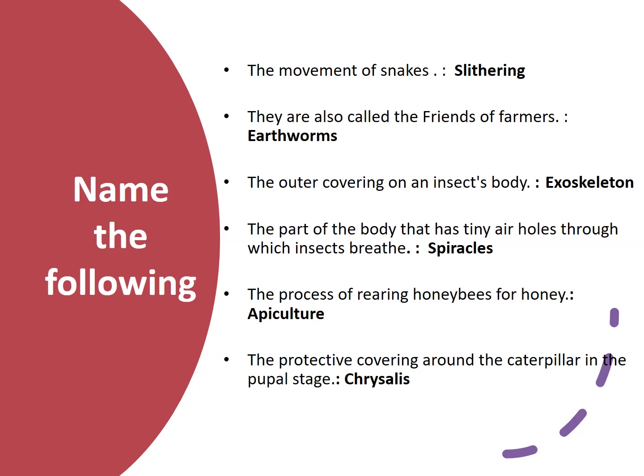The outer covering on an insect's body is the exoskeleton. The part of the body that has tiny air holes through which insects breathe is called spiracles. The process of rearing honeybees for honey is apiculture. The protective covering around the caterpillar in the pupa stage is called chrysalis.